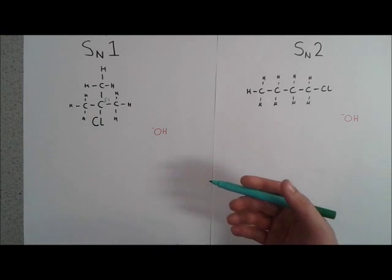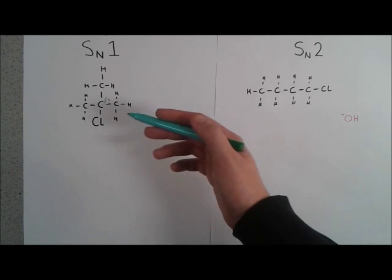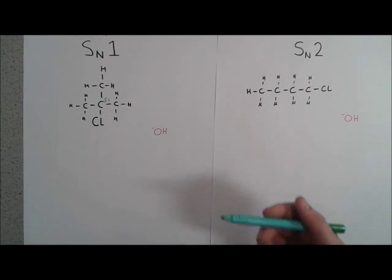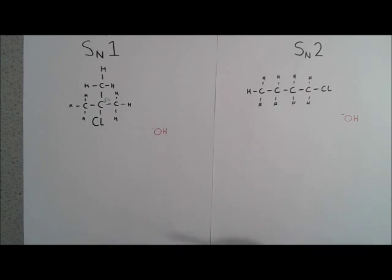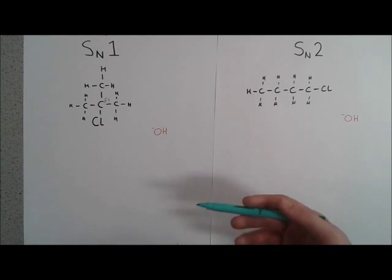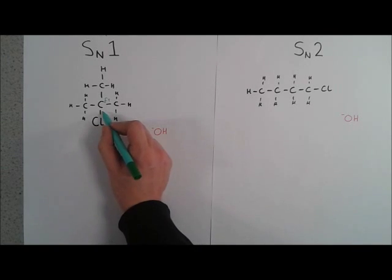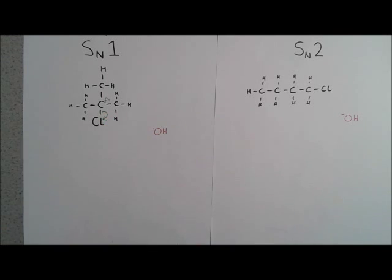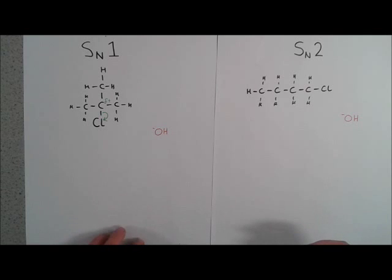Steric hindrance refers to the number of particles that block an attack or block movement of atoms. So all we have to do is wait for the chlorine to break off, shown by a double-headed arrow from the bond onto the chlorine. In this case the OH- has had no effect on the reaction yet.